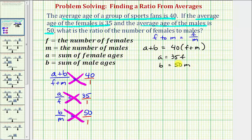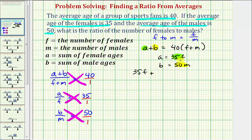So now from here, if we can form an equation that contains just f and m, we can solve the equation for f divided by m to find the ratio of the number of females to males. Notice how because a equals 35f, we can substitute 35f for a in the first equation. And because b equals 50m, we can substitute 50m for b in the first equation. That'll give us one equation with just f and m. So performing the substitution, we would have 35f plus 50m must equal — let's go ahead and distribute — 40f plus 40m.